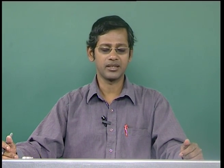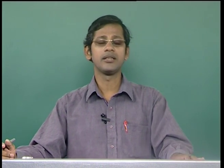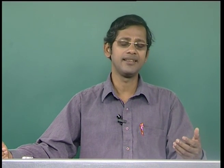Today we are going to discuss a new advanced surface characterization technique. The name of the technique is Auger electron spectroscopy, or in short it is known as AES. We have discussed about XPS or X-ray photoelectron spectroscopy in detail, so some of the concepts I will borrow from XPS to AES, but I will also discuss many other new things in this advanced spectroscopic technique.